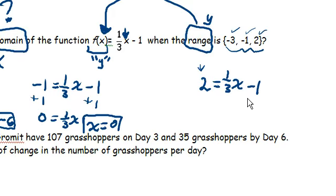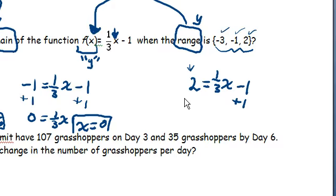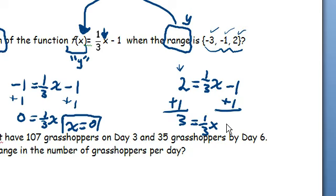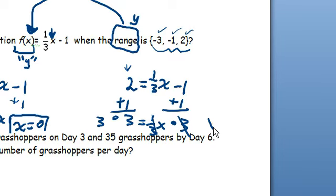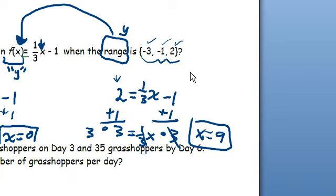And in this last problem here, I'll add 1 to that side, add 1 to that side. That gives us 3 equals 1/3 x. Times 3, times 3. Those 3s, that 1/3 cancels with that 3. And that gives me x equals 9. So our domain is negative 6, 0, and 9.